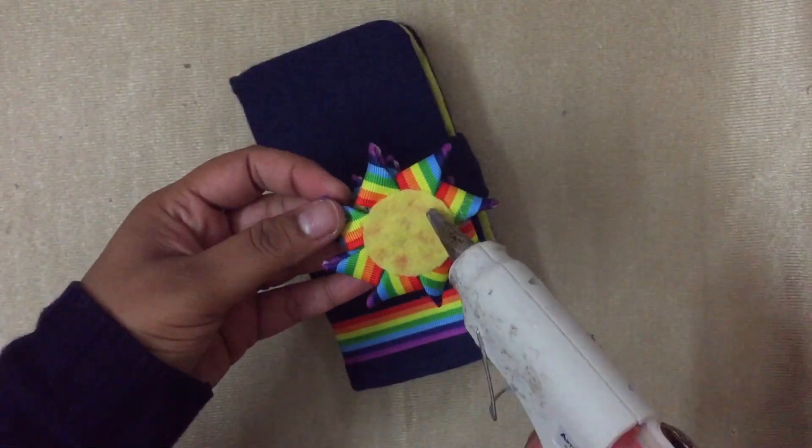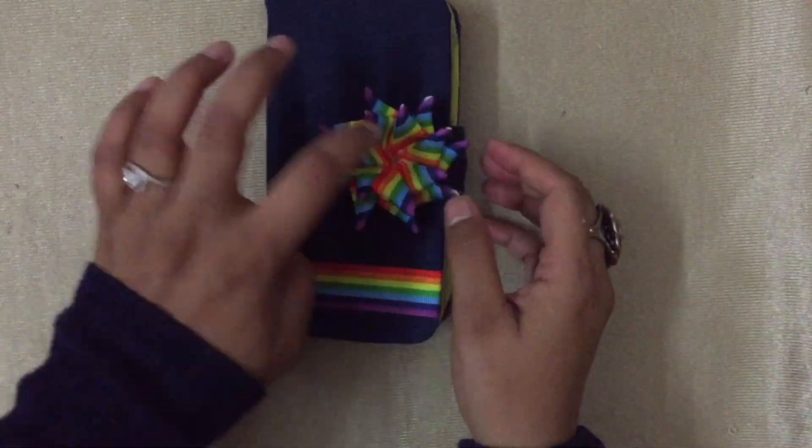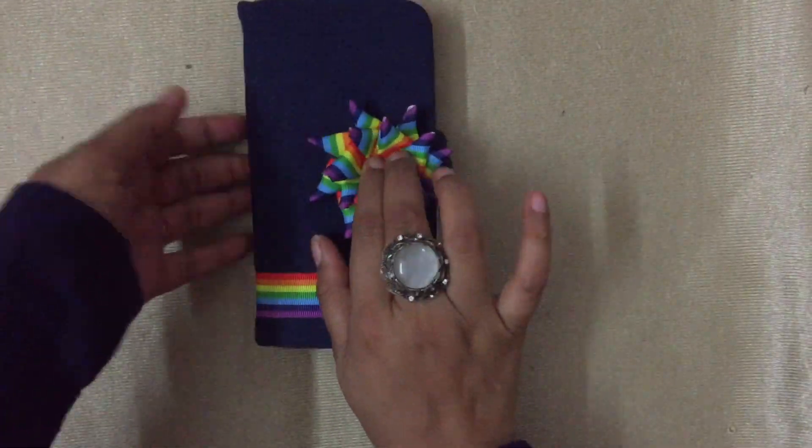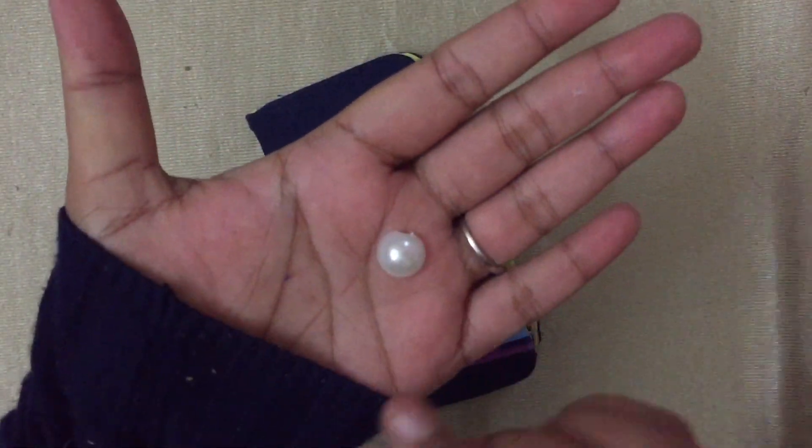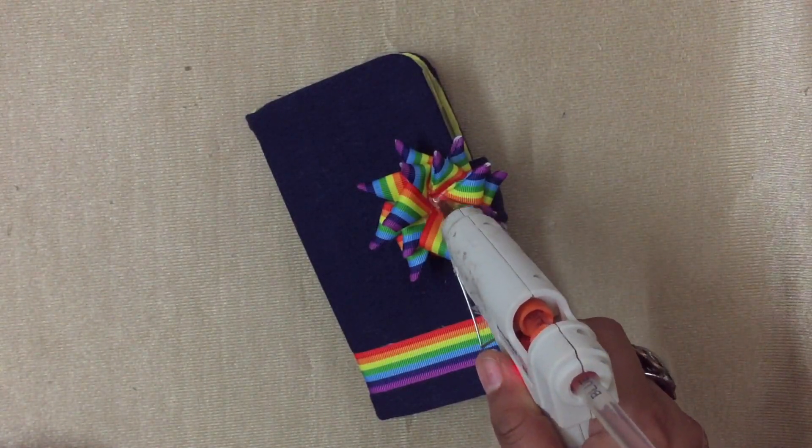Now glue the flower to the flap of the phone. Actually, I glued a white bead in the middle of the flower like so.